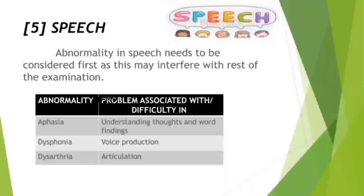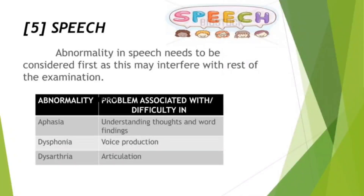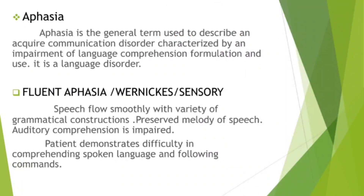Speech abnormality needs to be considered first, as this may interfere with the rest of the examination. Abnormalities may include: aphasia, which is a problem in understanding thoughts and word finding; dysphonia, which is a problem in voice production; and dysarthria, which is difficulty in articulation. Aphasia is the general term used to describe an acquired communication disorder characterized by an impairment of language comprehension, formulation, and use. It is a language disorder.